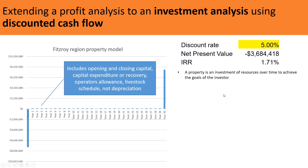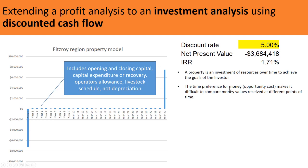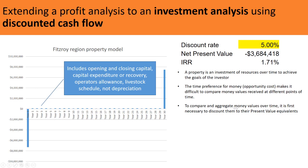This property is an investment of resources over time to achieve the goals of the investor. The time preference of money — the opportunity cost of money — makes it difficult to compare money values received at different points in time. If offered the same amount in year 10 versus now, most people prefer the money now because year 10 is uncertain. People prefer income certainty, and if they don't have certainty, they apply an opportunity cost — in this case 5%.